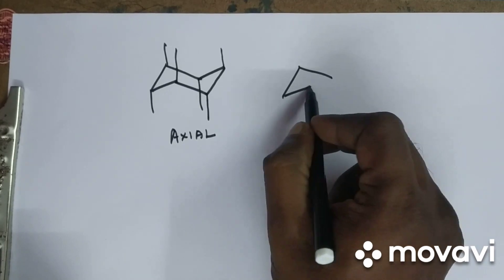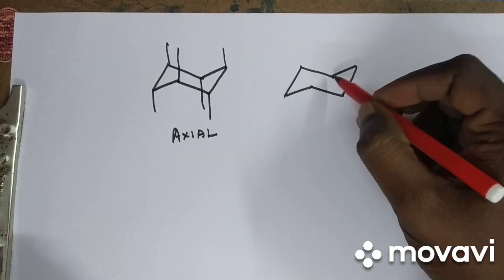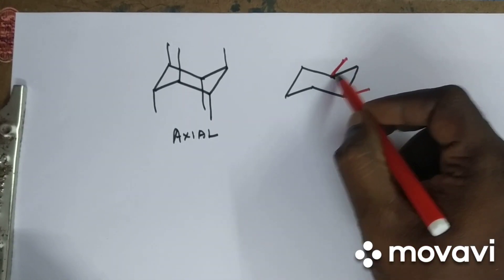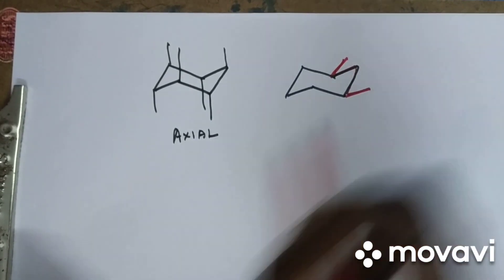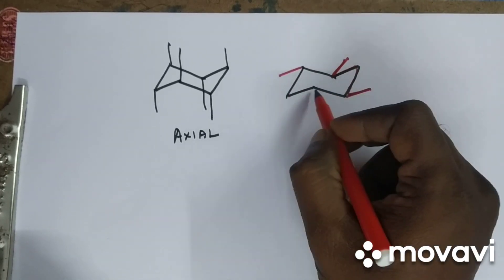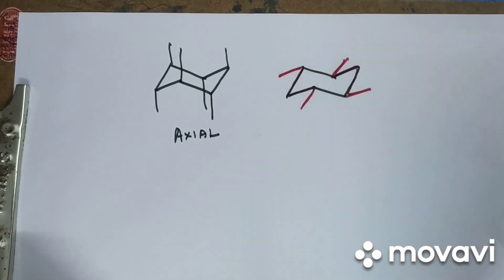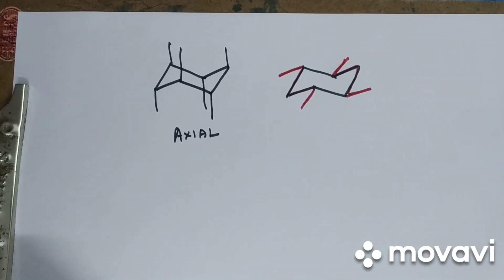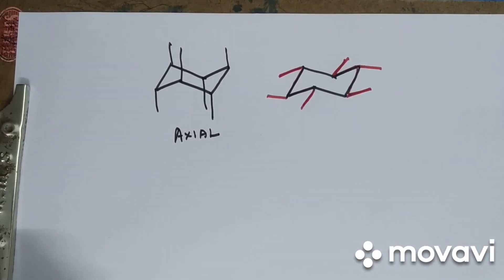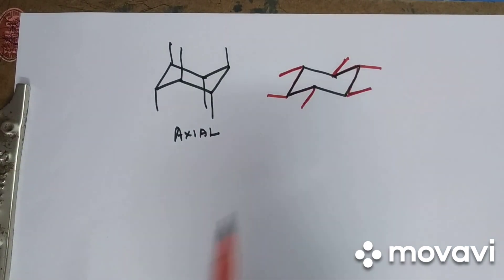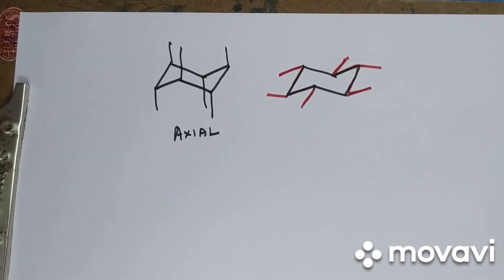Now for the equatorial bonds, draw the chair form of cyclohexane again. Draw a W shape — you can see the W here. Similarly draw another W. So you have drawn two W's, then draw a line closer to horizontal — not exactly horizontal but close. Two W's and two near-horizontal lines — these bonds are equatorial bonds.